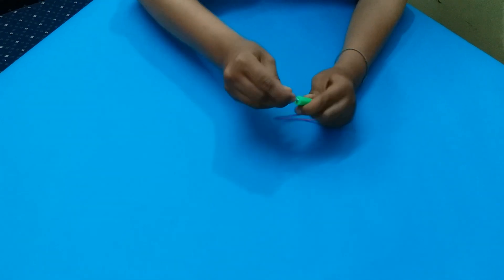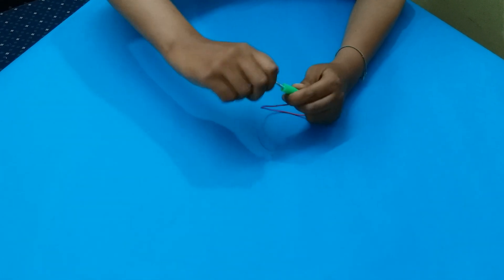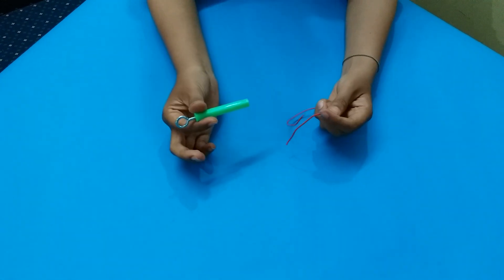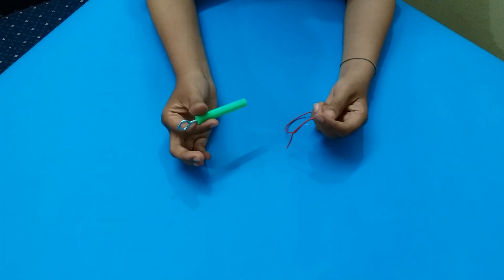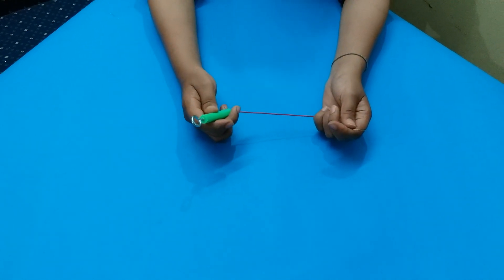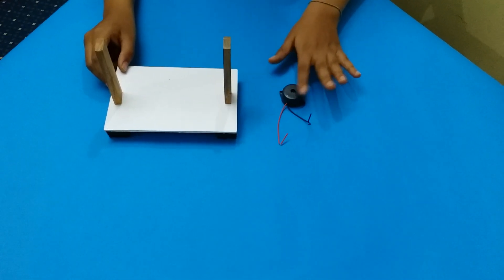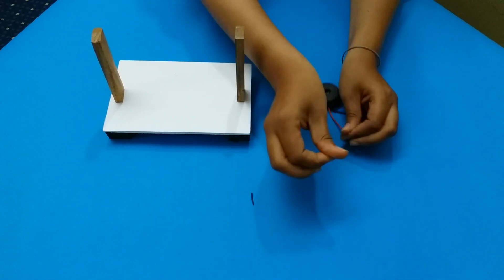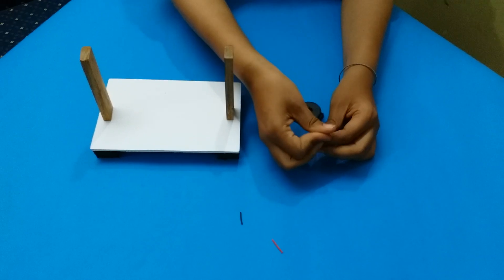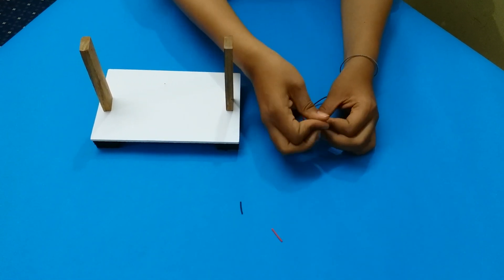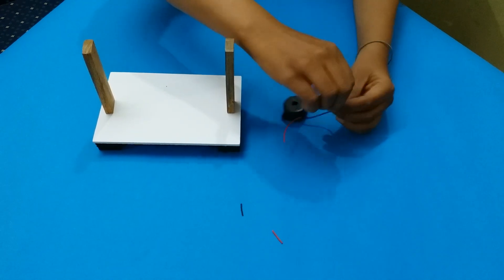After passing the wire, fix the hook. This will act as a handle in the game. Take the buzzer, remove the insulation of the wires from both sides. Do it for the wire as we did before.